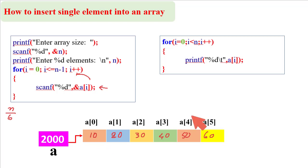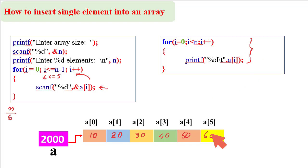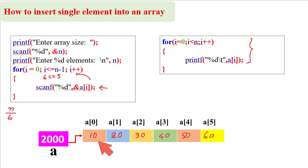After all values are entered, i becomes 6. Since 6 is not less than or equal to n minus 1 (which is 5), the for loop terminates. We can then print the array values using a for loop with printf. Our target is to insert a new value at any position in this array — at this position, or this position, or any position.